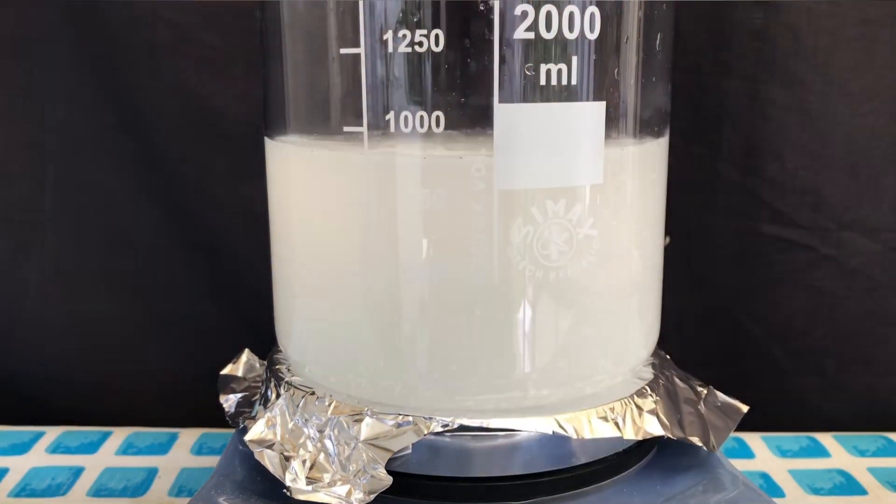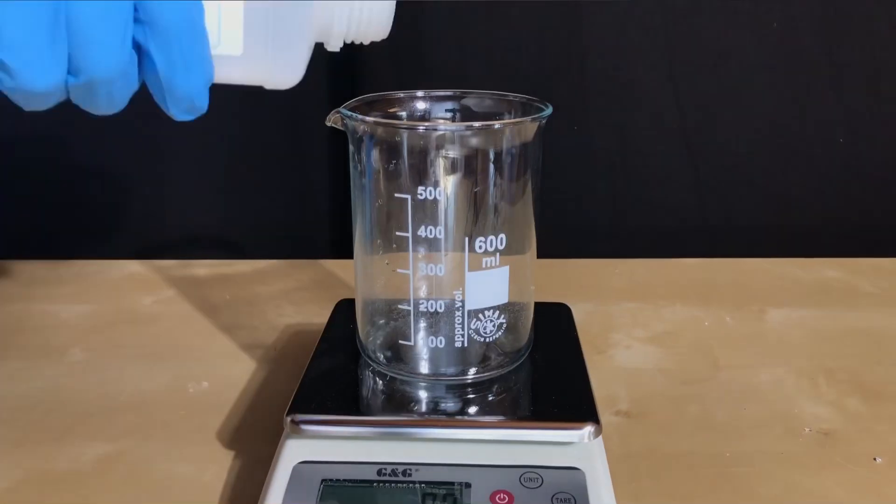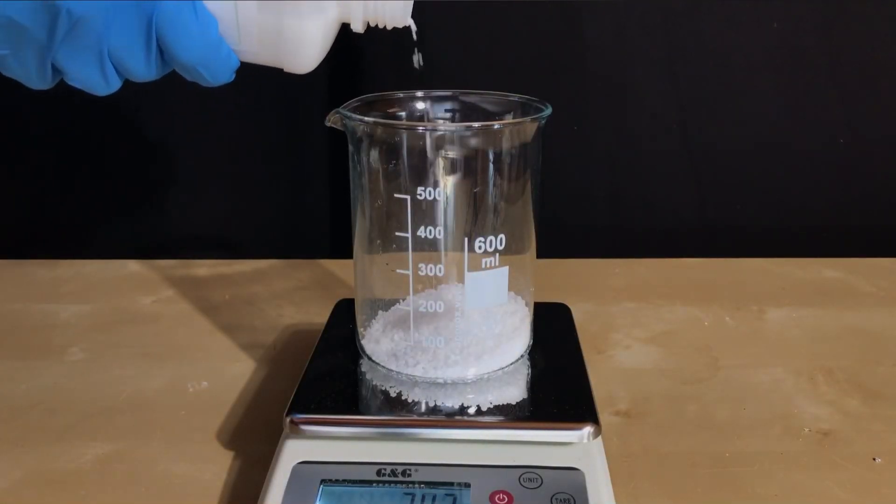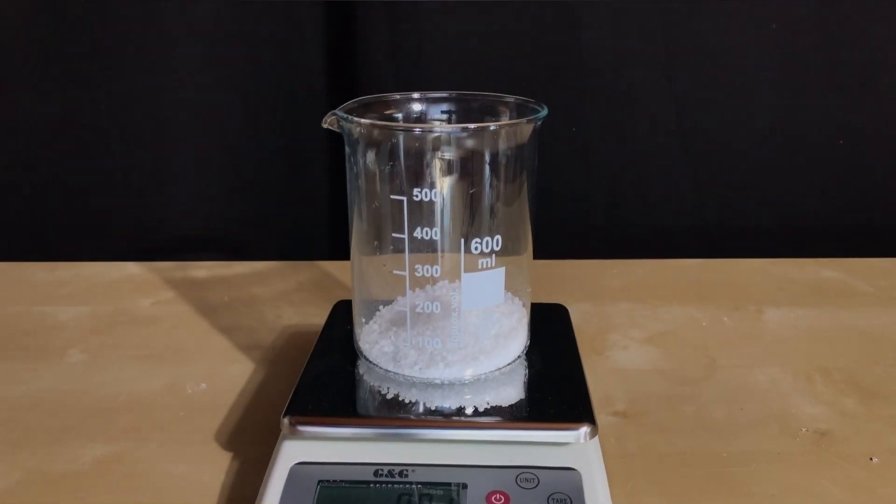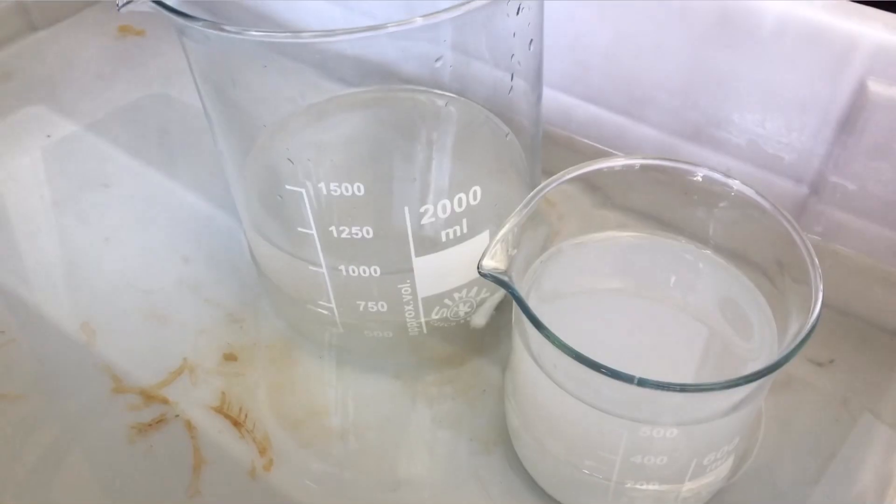Afterwards, anhydrous calcium chloride was added and we occasionally controlled the temperature by touching the glass. This way, we can avoid too much decomposition and if it gets too hot, you can simply put it into a water bath.